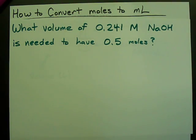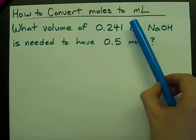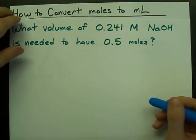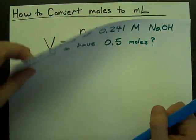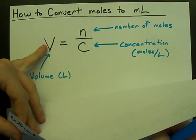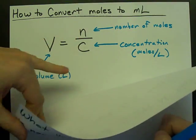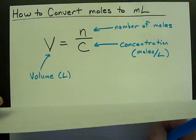How do you calculate the volume of a solution needed to have a certain number of moles? Well, the volume needed is going to be the number of moles that you need divided by the concentration of the solution.